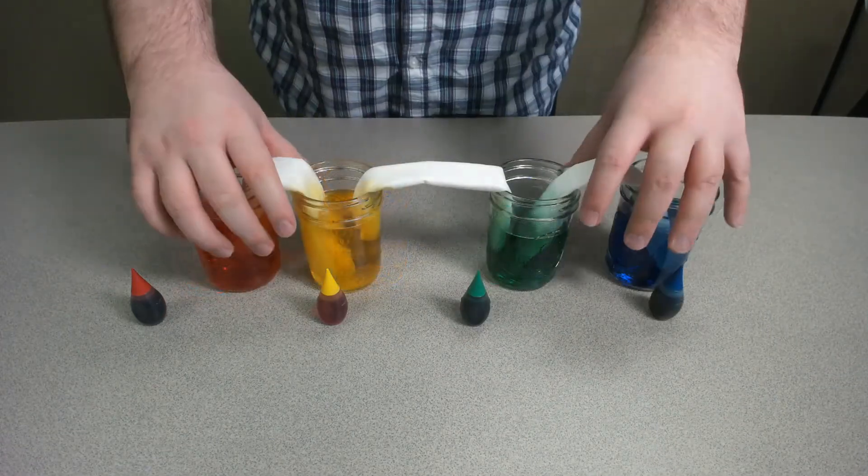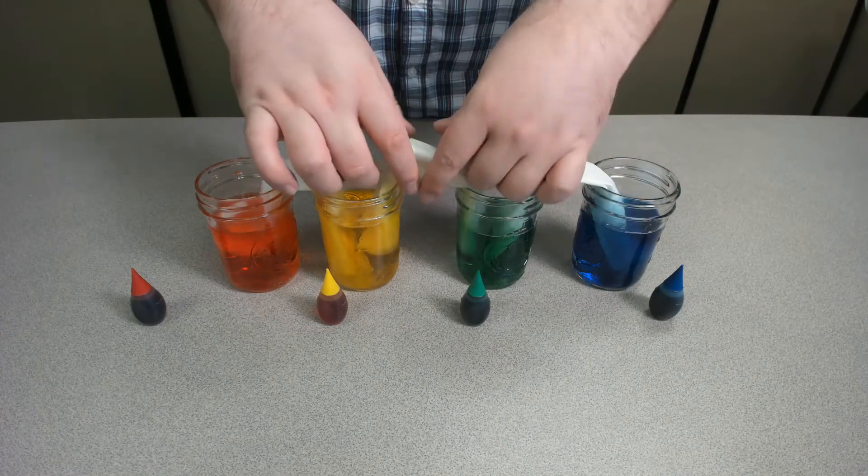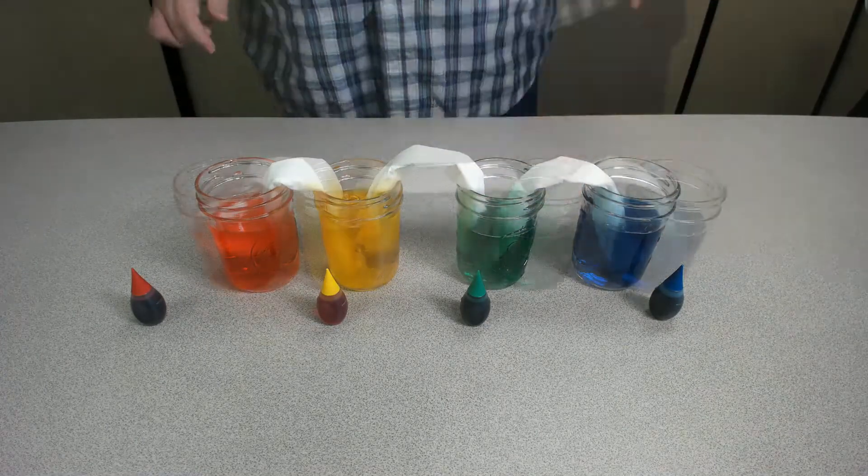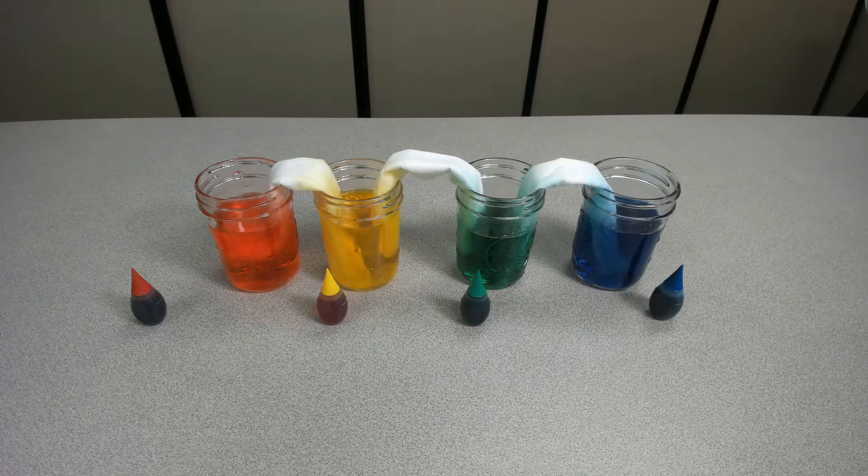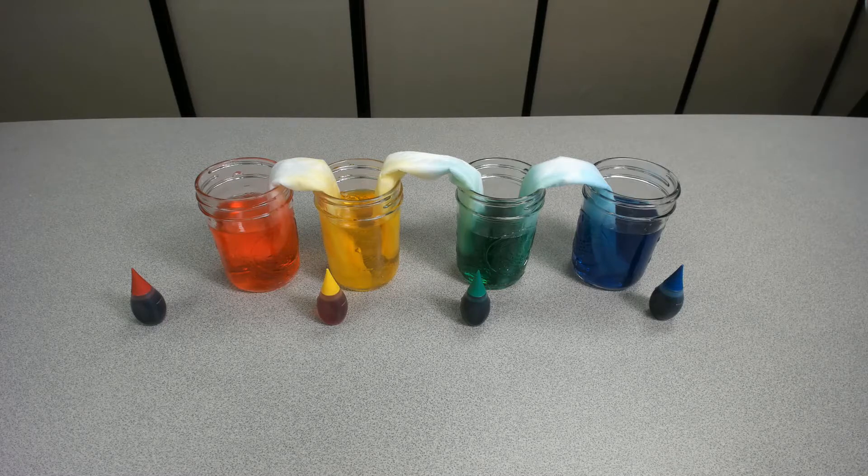Same as before, we are sticking either paper towels or napkins into the water and then connecting the other end of the napkin into the next jar over. As we do this, the water from the jar gets sucked up into our bridges and the different colors start to meet in the center, creating our bridges into a colorful display.